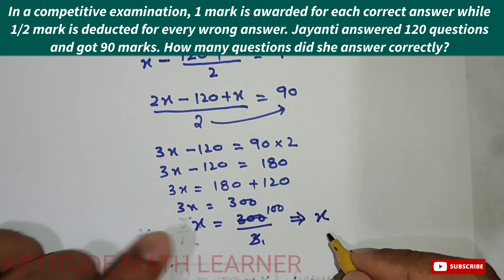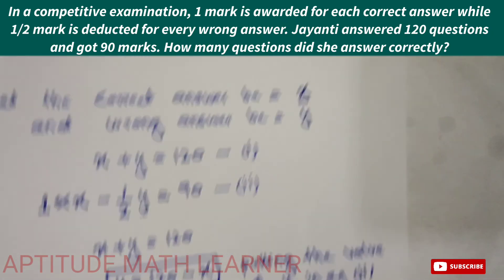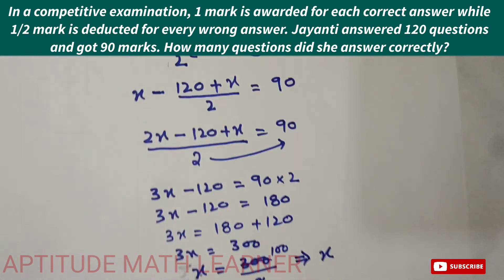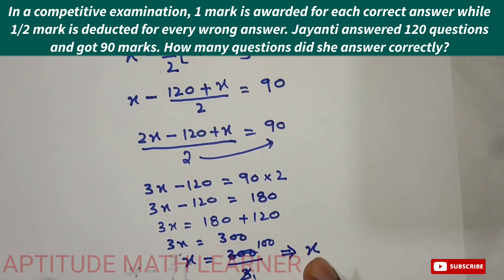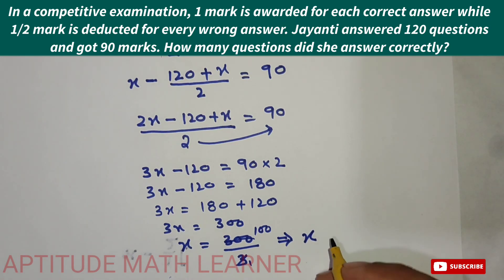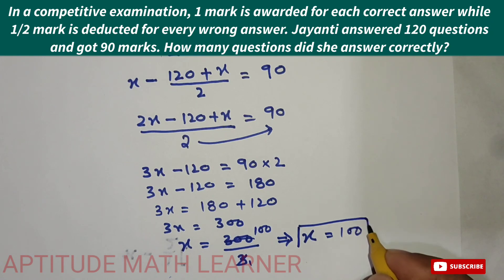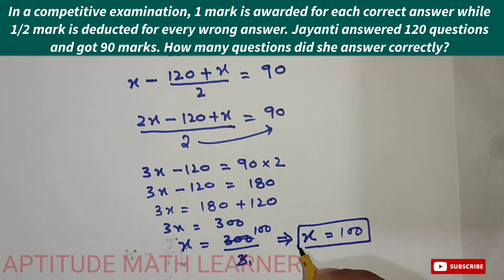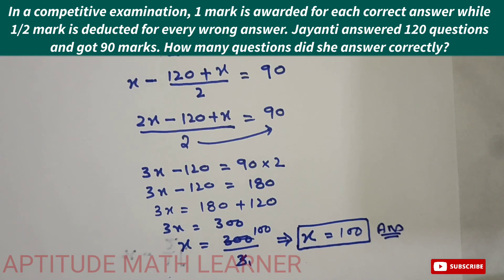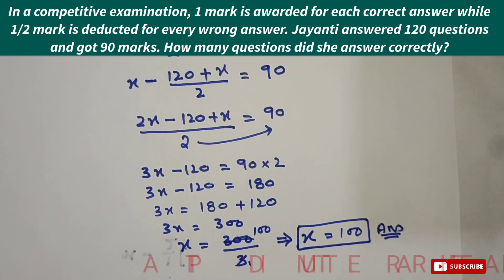We had let the correct answers be x, and we found x equals 100. So Jayanti answered 100 questions correctly and 20 questions were wrong. That is our final answer. I hope you completely understood. Thank you very much.